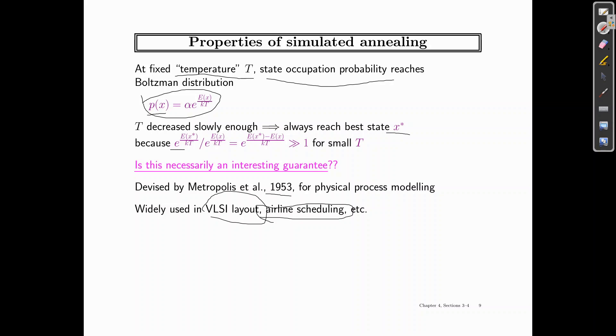And the reason for this is that this term is always greater than one for small T's. Now, whether or not this is an interesting guarantee, well, this is practical because it's been used as we just discussed in a number of problems. And you can optimize large scale problems using this methodology. What would be interesting is if we were to compare a random restart hill climbing on an eight queen puzzle with the same approach on simulated annealing.